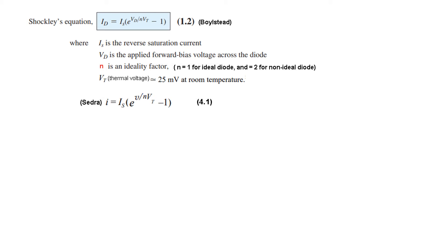In Sadra's book he has written the same thing but for ID he has written I. This can be simplified by neglecting minus 1 because the other portion is big. And so this is our approximate equation. And as I mentioned that in this video we will be taking N is equal to 1.